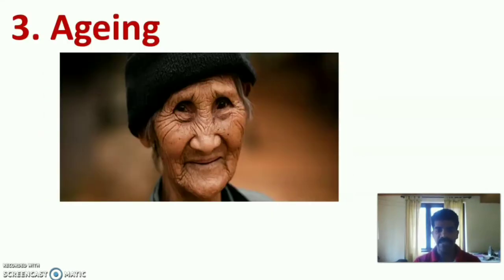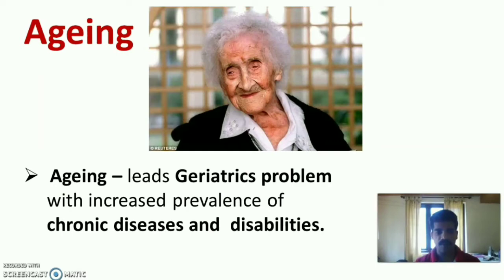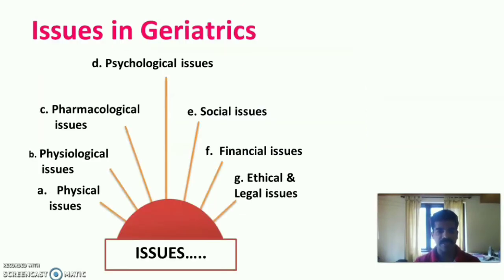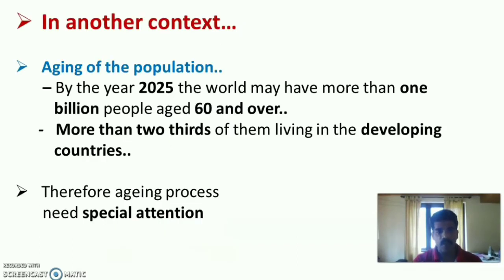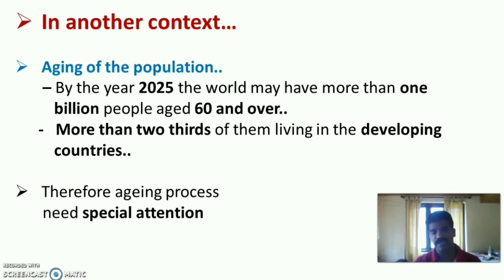The third factor is aging. Aging leads to geriatric problems with increased prevalence of chronic diseases and disabilities. The issues in geriatrics are physical, physiological, pharmacological, psychological, social, financial, and ethical and legal issues. By the year 2025, the world may have more than one billion people aged 60 and over, with more than two-thirds living in developing countries. Therefore, the aging process needs special attention.